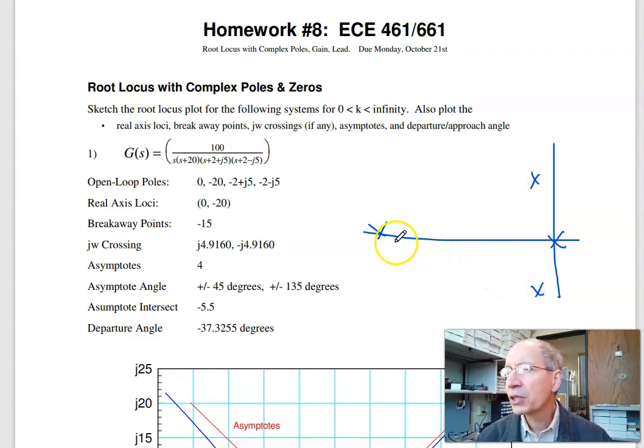The real axis loci - when there's an odd number of poles to the right, so here's even, odd, even, they're between 0 and minus 20. Breakaway point is the midpoint pushed left, so midpoint is minus 10, somewhere like minus 15-ish.